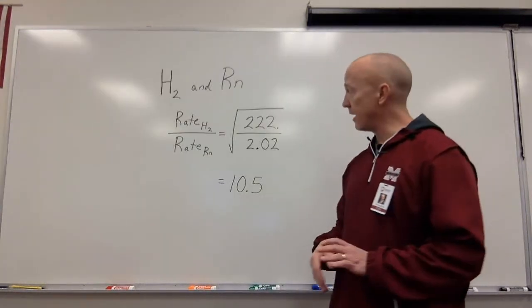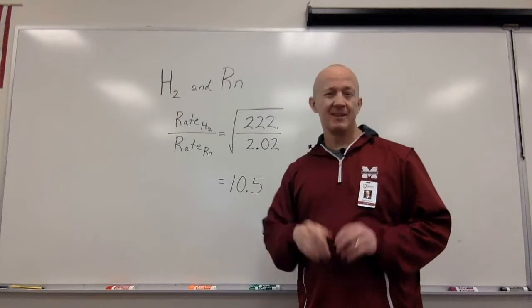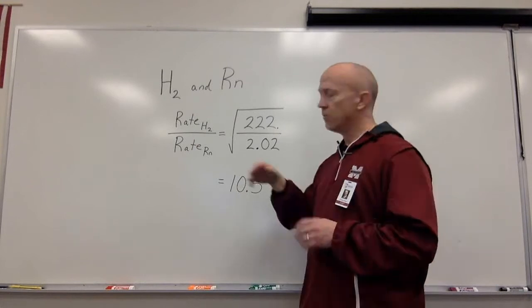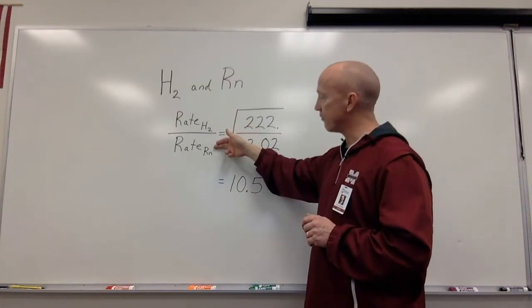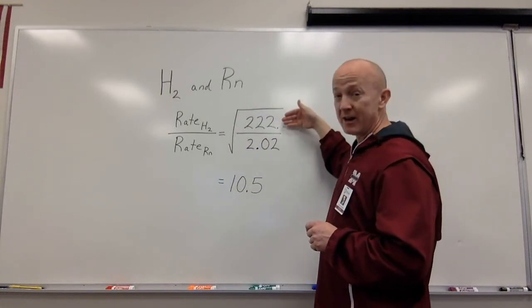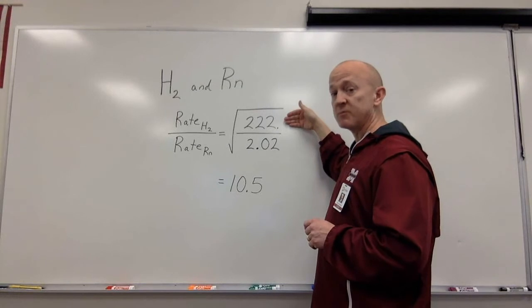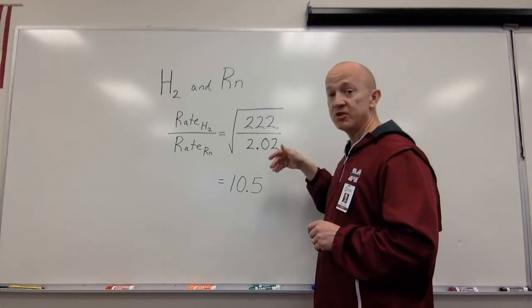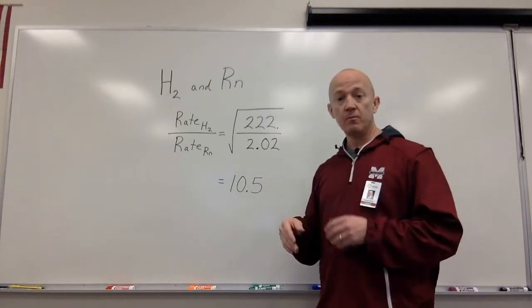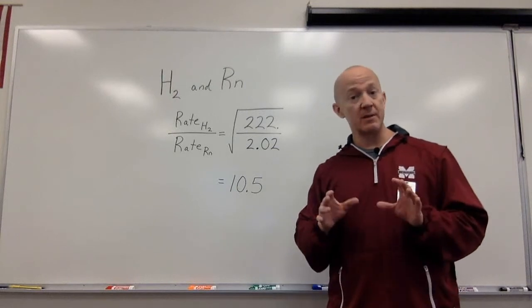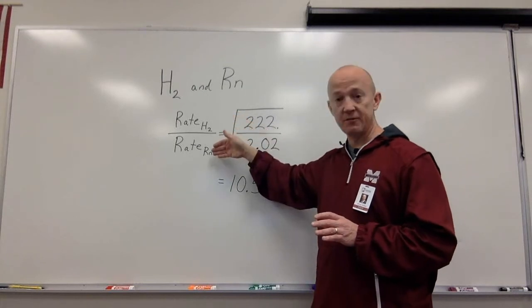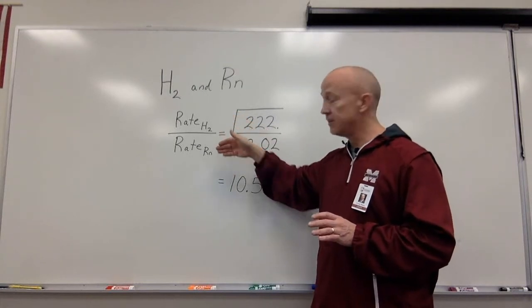Let's use Graham's Law to compare hydrogen gas and radon gas. Now, we know that hydrogen is a lot smaller than radon, but how much faster is it? Well, the rate of hydrogen gas compared to the rate of radon gas is equal to the square root of the mass of radon, 222 grams per mole, divided by the mass of hydrogen gas. Remember, H2. 2.02 grams per mole. When we do the math, we get 10.5. What that means is, hydrogen is 10.5 times faster at diffusing, or effusing, than radon gas is.